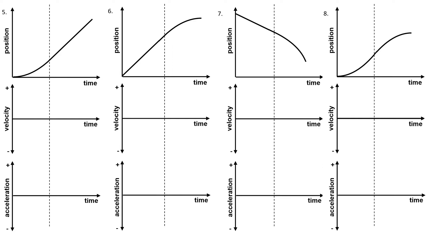Number five has two motions. You start with no slope and go to a positive slope, which means you would start with no velocity and go to a positive velocity. Then that slope stays the same, so your velocity would have a flat line because you are traveling at the same constant speed. Here I have a positive slope, which means I would have a positive constant acceleration. But then I have a slope of zero, which would tell me that my acceleration is zero.